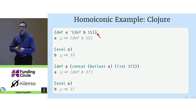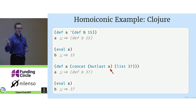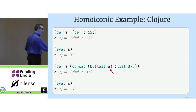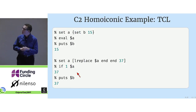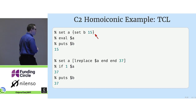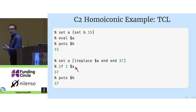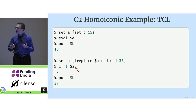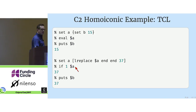Perhaps it might be a little more familiar if I put this in Clojure — it's doing the same thing: defing a var a to be an expression, evaluating it, looking at the result. We can't actually modify a list in Clojure, but we can do the next best thing: get a new version and redefine a and evaluate it again. Another example the C2 wiki gives is Tcl, or Tool Control Language, a popular early scripting language. You set a to a block expression, evaluate it, print the value, modify it to set the number to 37 — and in Tcl you don't even have to call eval. If you have an expression in a variable, you can use that variable in a piece of syntax and it will get evaluated.